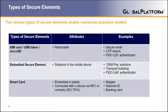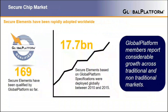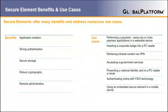These technologies have been extremely successful. We can see that the security market has grown significantly in recent years. The Global Platform organization has qualified more than 150 secure element products as an example. There are 15.7 billion secure elements based on Global Platform specifications shipped between 2010 and 2015. Members of Global Platform are reporting considerable growth across traditional and non-traditional markets, and this is particularly true in the IoT space. We have seen that this technology is robust and universally available. So let's look at the benefits — why would a service provider use a secure element?